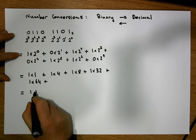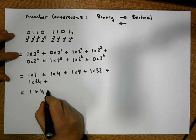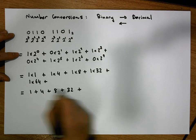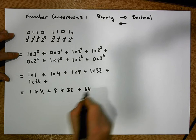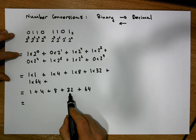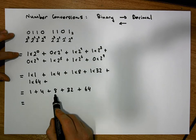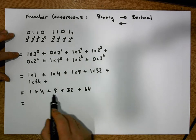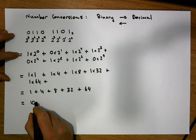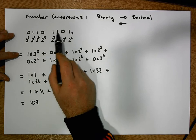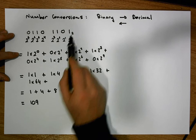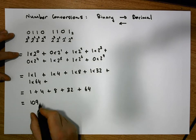This gives us: 1 × 1 = 1, plus 1 × 4 = 4, plus 1 × 8 = 8, plus 1 × 32 = 32, plus 1 × 64 = 64. So 64 and 32 gives 96, plus 8 gives 104, plus 4 gives 108, plus 1 gives 109. So 01101101 in base 2 is equivalent to 109 in base 10.